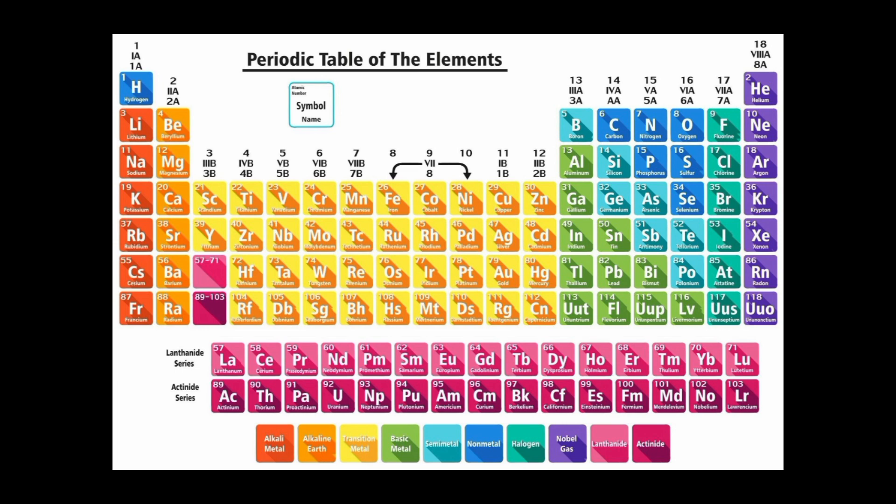The elements in the periodic table are arranged in rows, periods, and columns, groups, according to their electronic configuration and valence electron count. Each element is represented by a unique symbol consisting of one or two letters, and its atomic number, atomic mass, and chemical symbol are also listed.